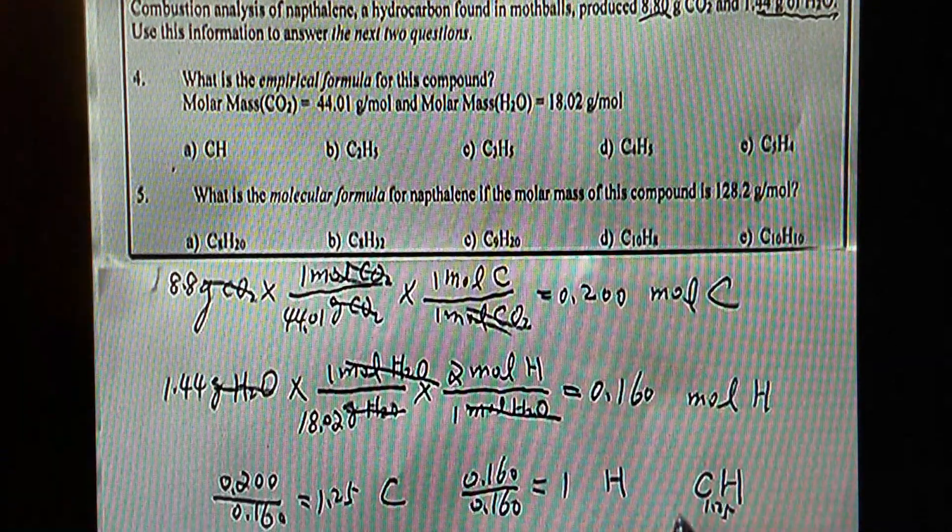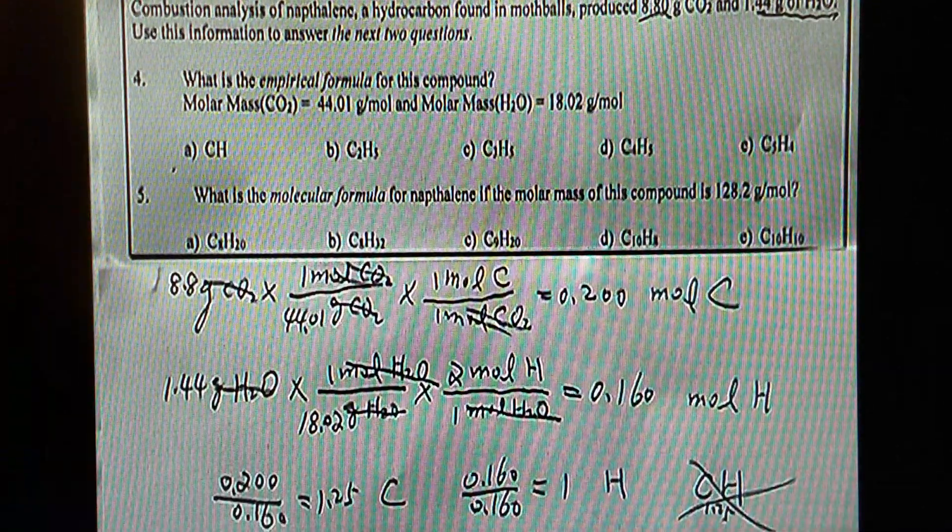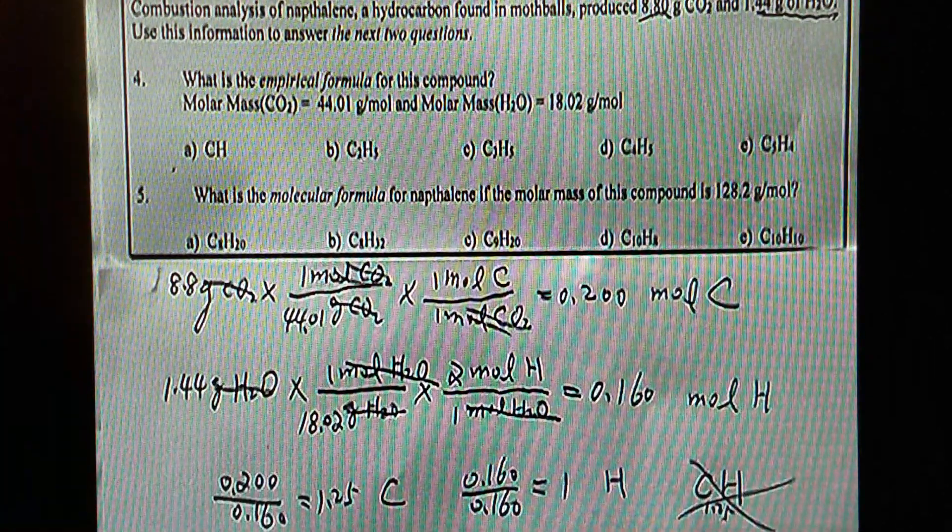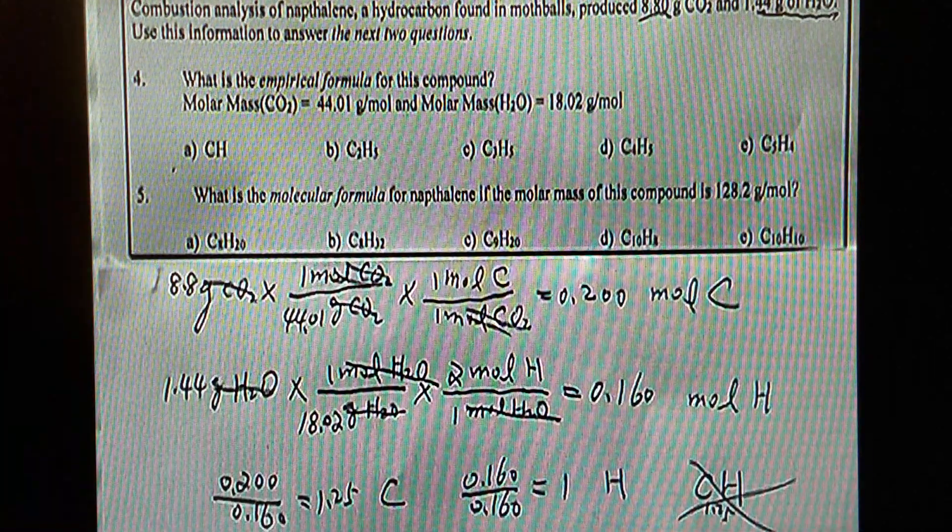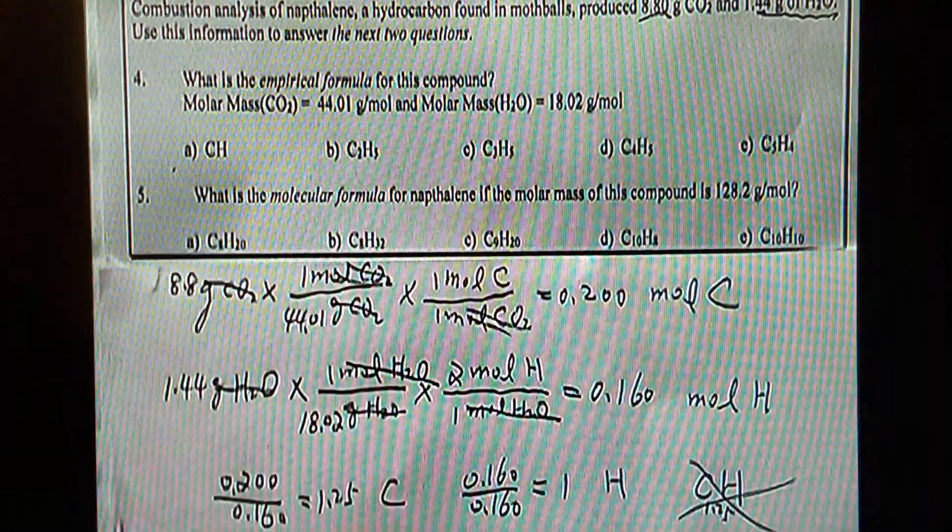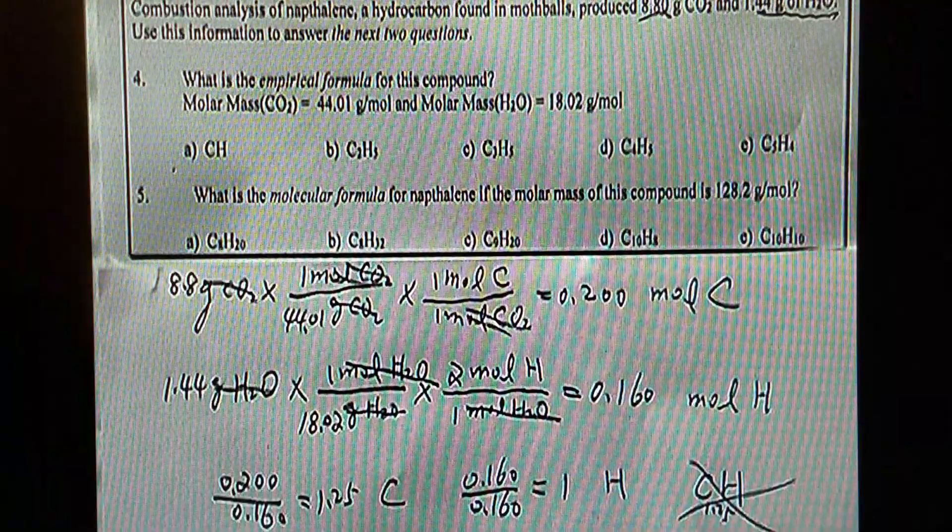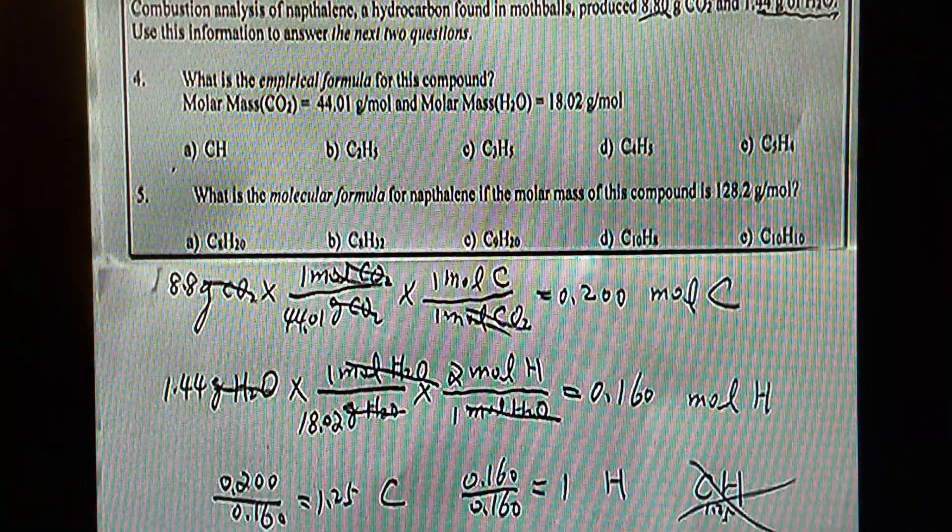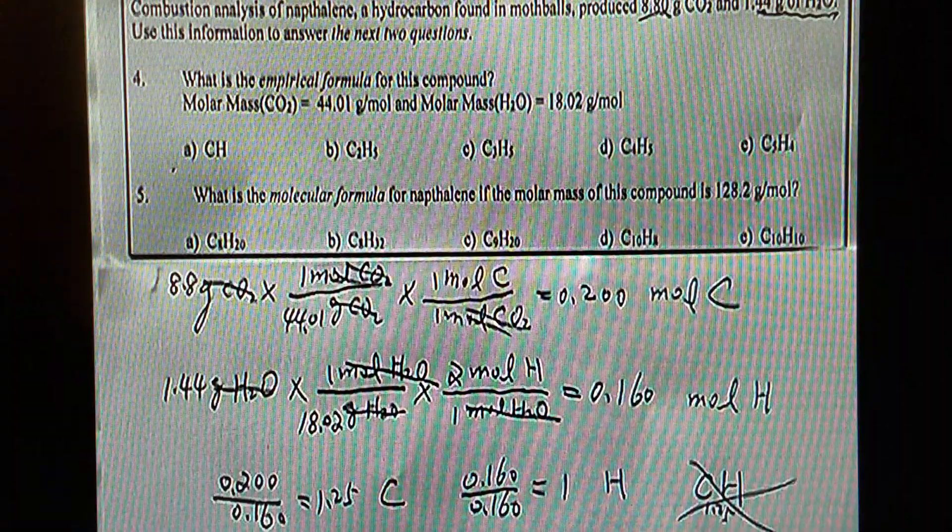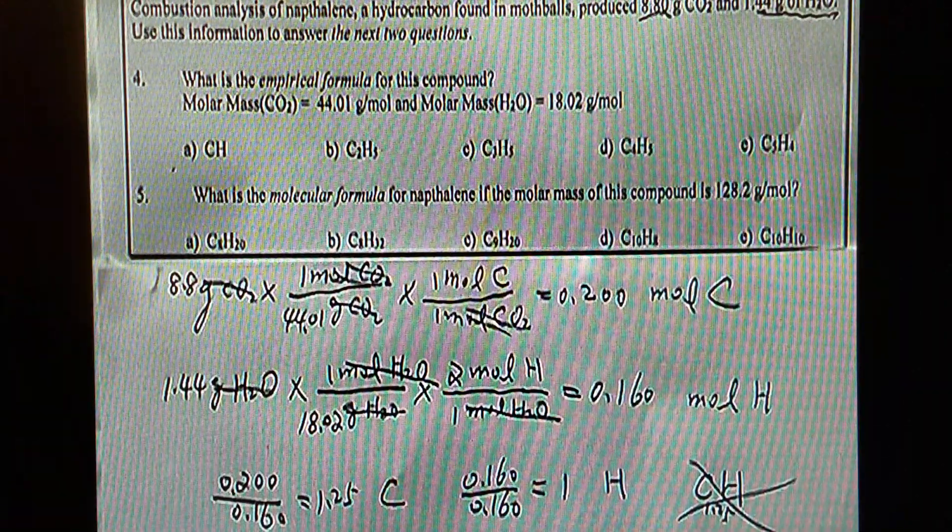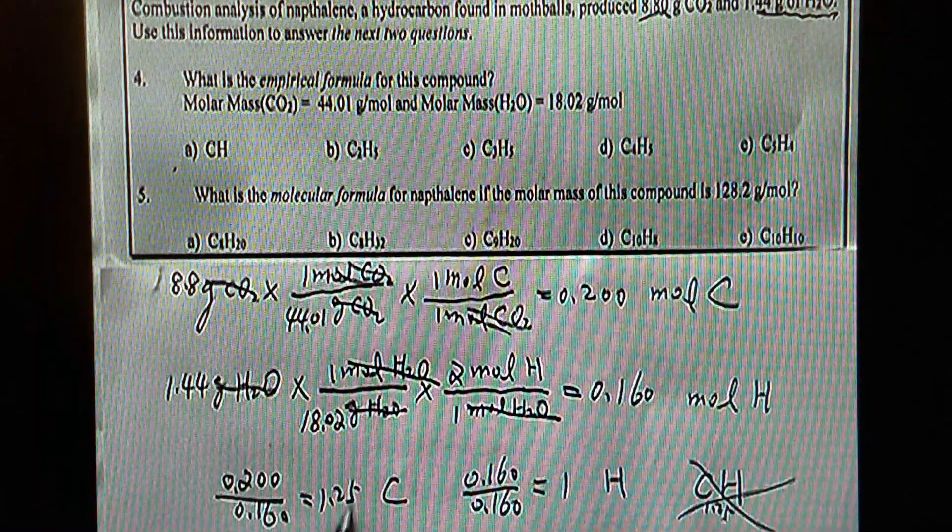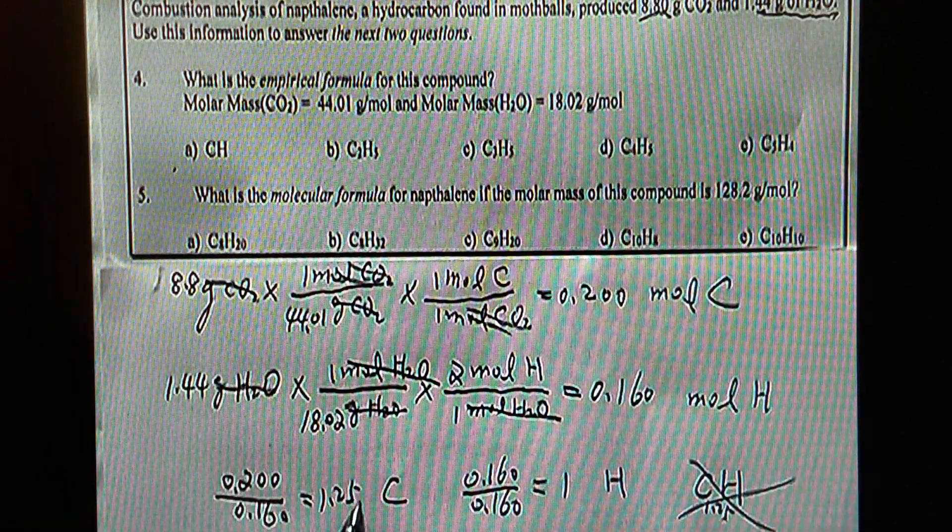But of course, this will not be allowed. Why? Because the subscript has to be a whole number. And the ratio of the subscripts, they have to be a whole number ratio - as small as whole number ratio, actually. So now, what do we do? We have to try to convert this non-whole number to a whole number.